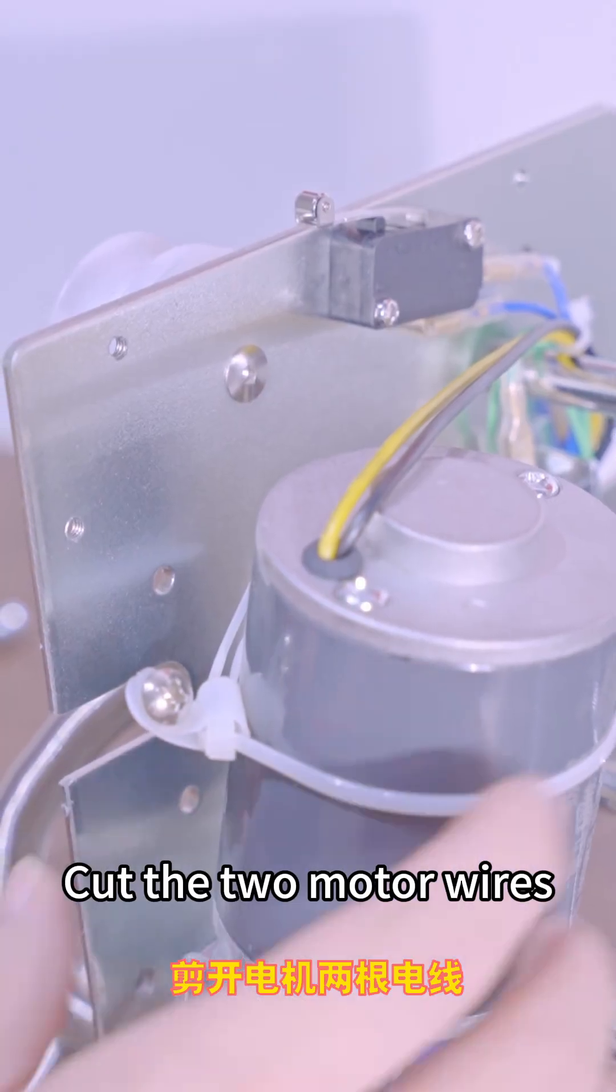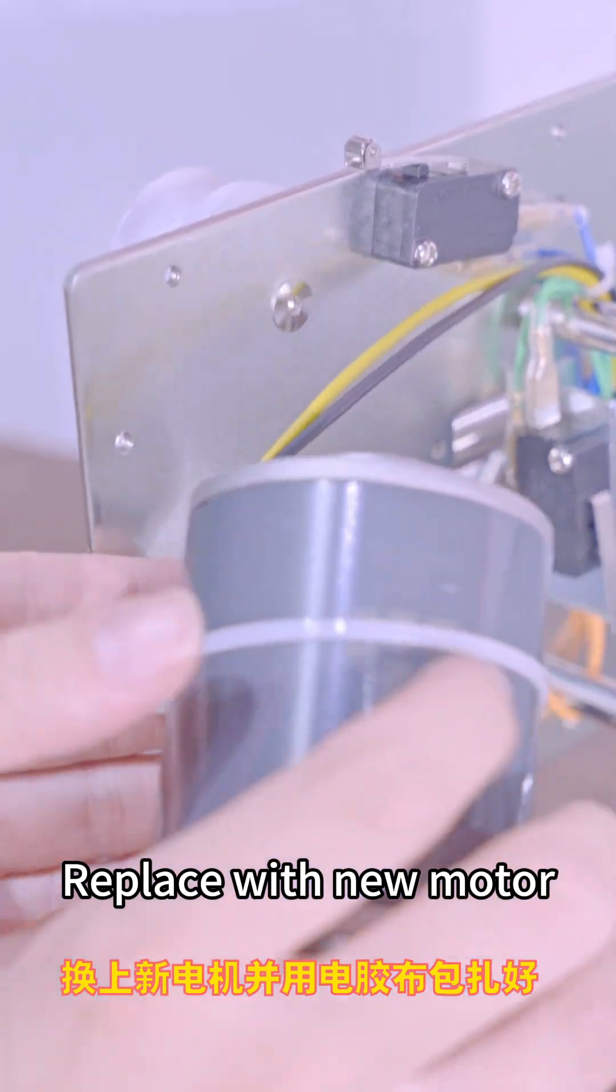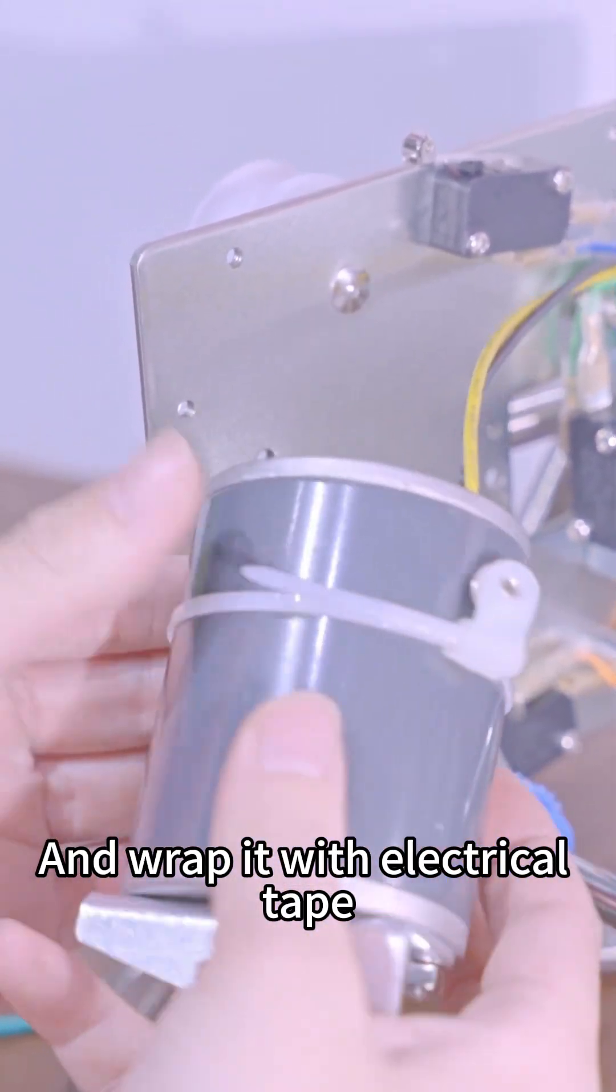Cut the two motor wires, replace with new motor and wrap it with electrical tape.